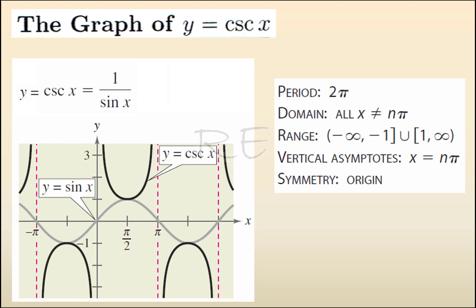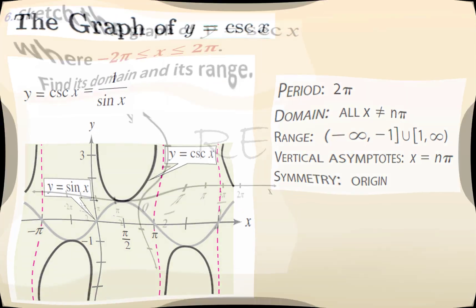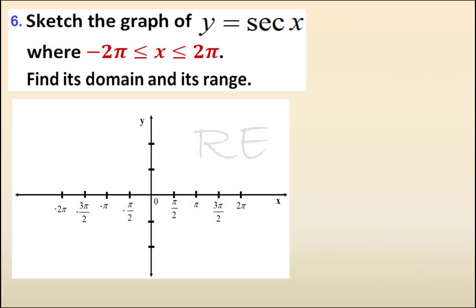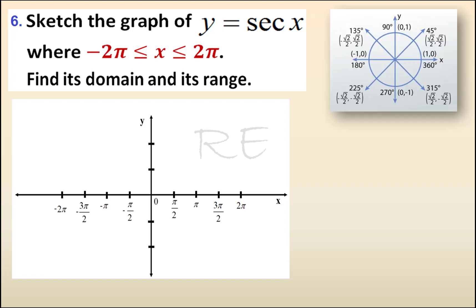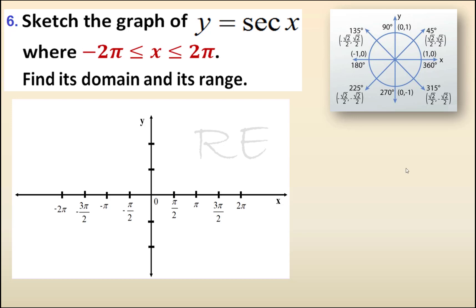If we understand y equals secant x to be 1 over cosine x, when we graph it between negative 2π and 2π,